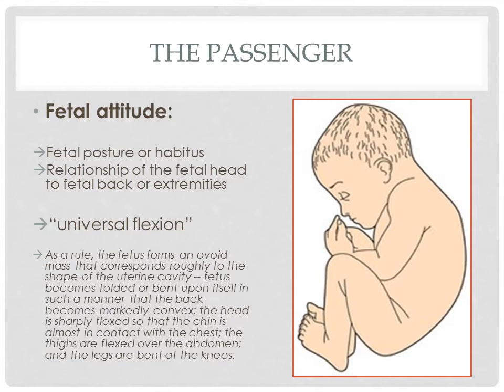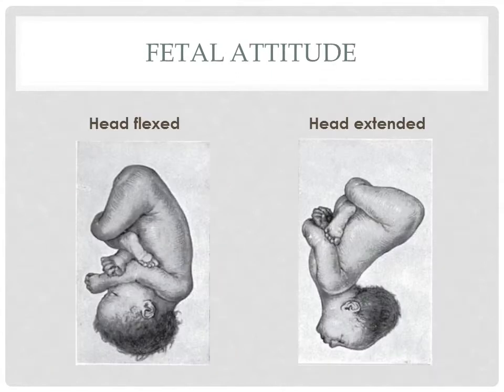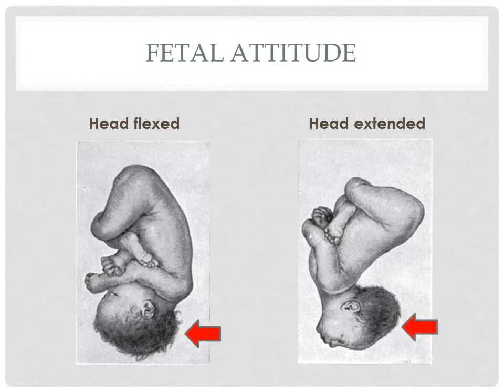The thighs are also flexed over the abdomen and the legs are bent at the knees. In a universal flexion posture, the fetal head is flexed with the chin coming in contact with the chest. However, in a fetus in face presentation, the head is extended or directed towards the fetal back — sometimes the occiput is almost touching the fetal back.